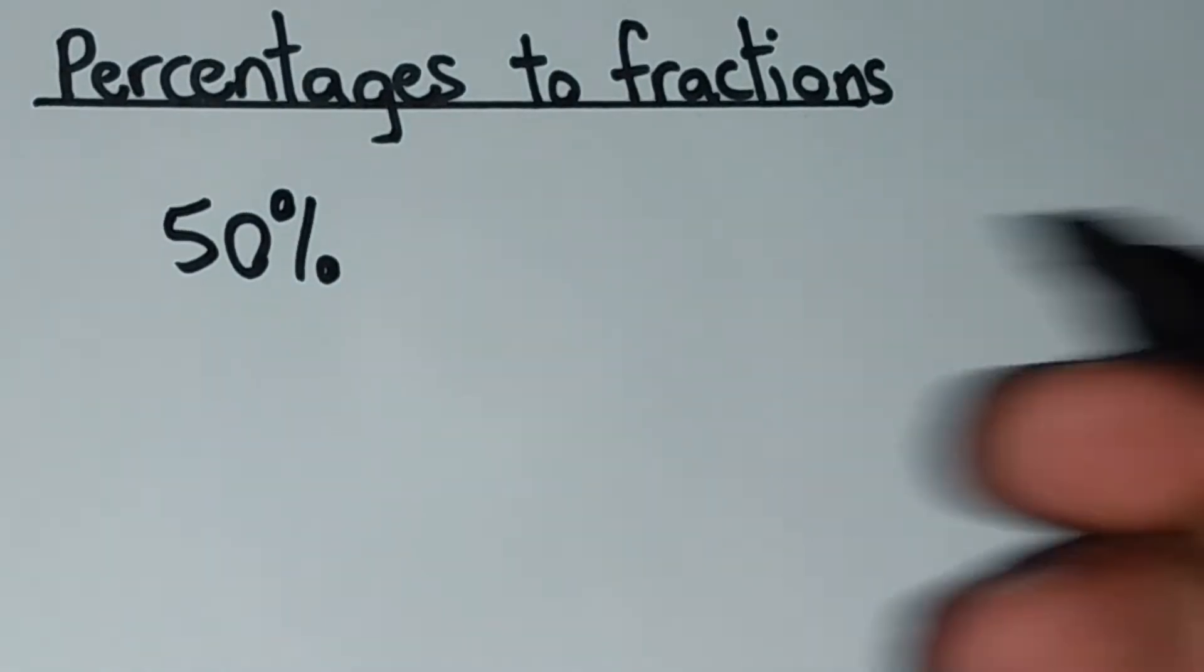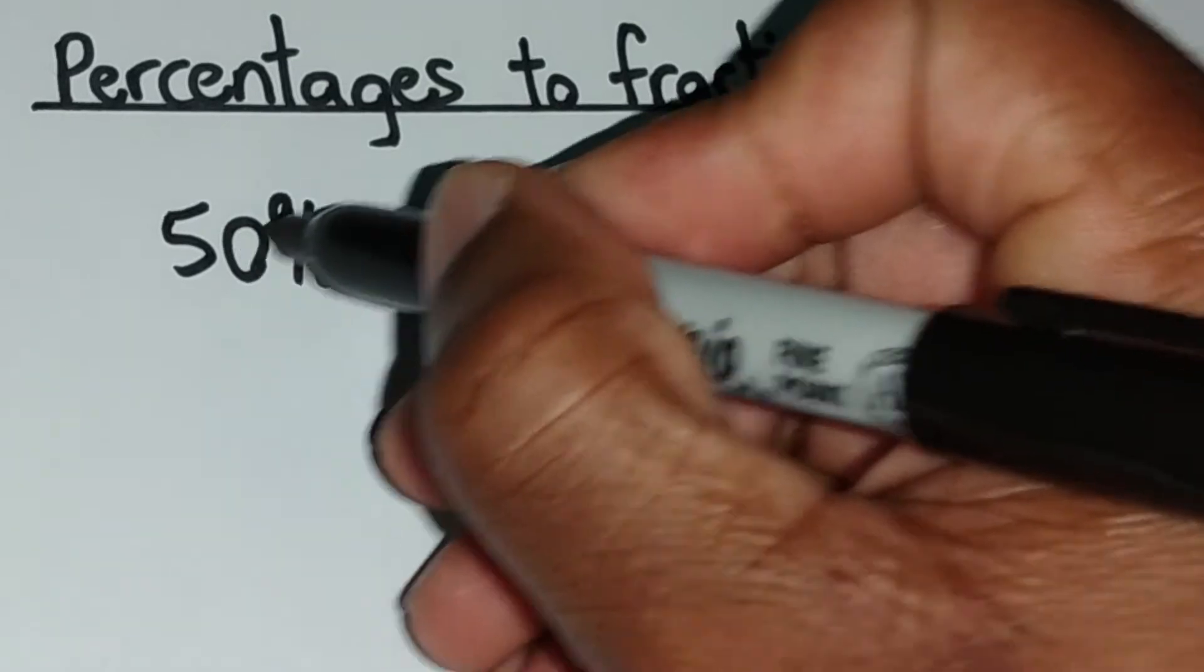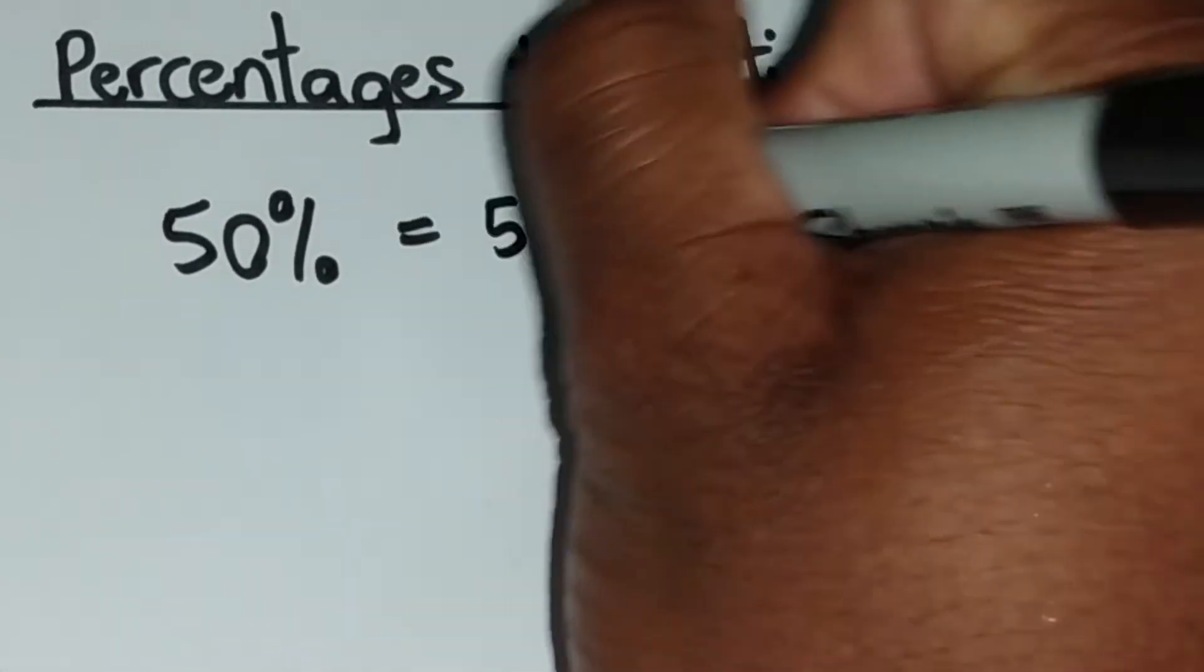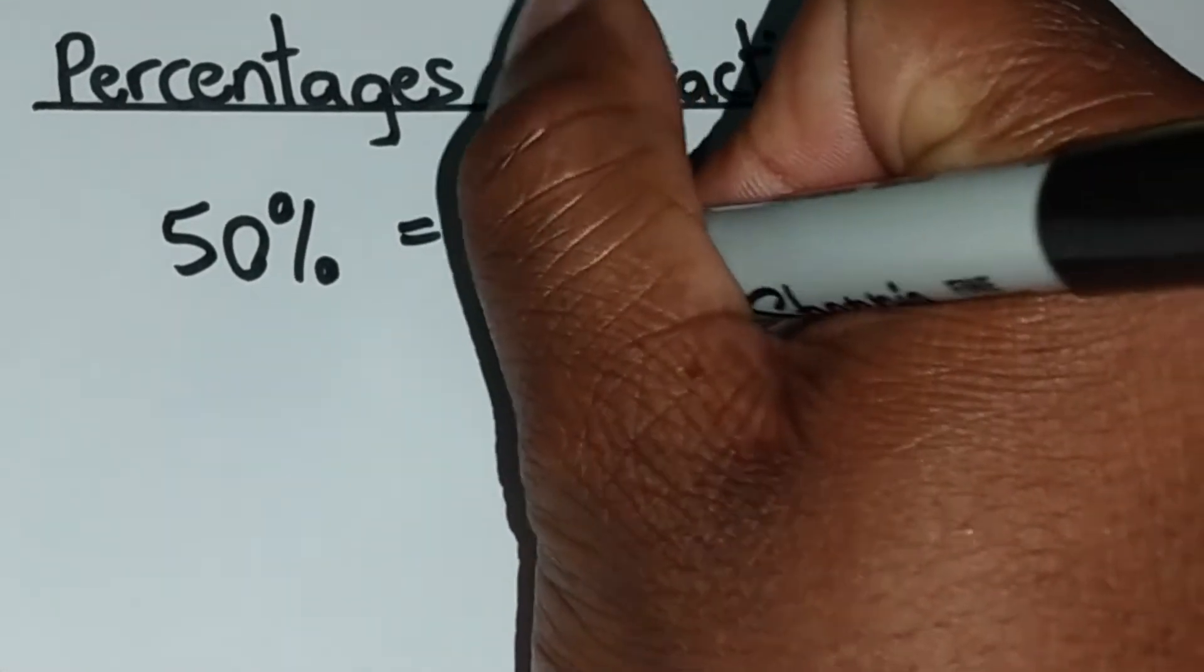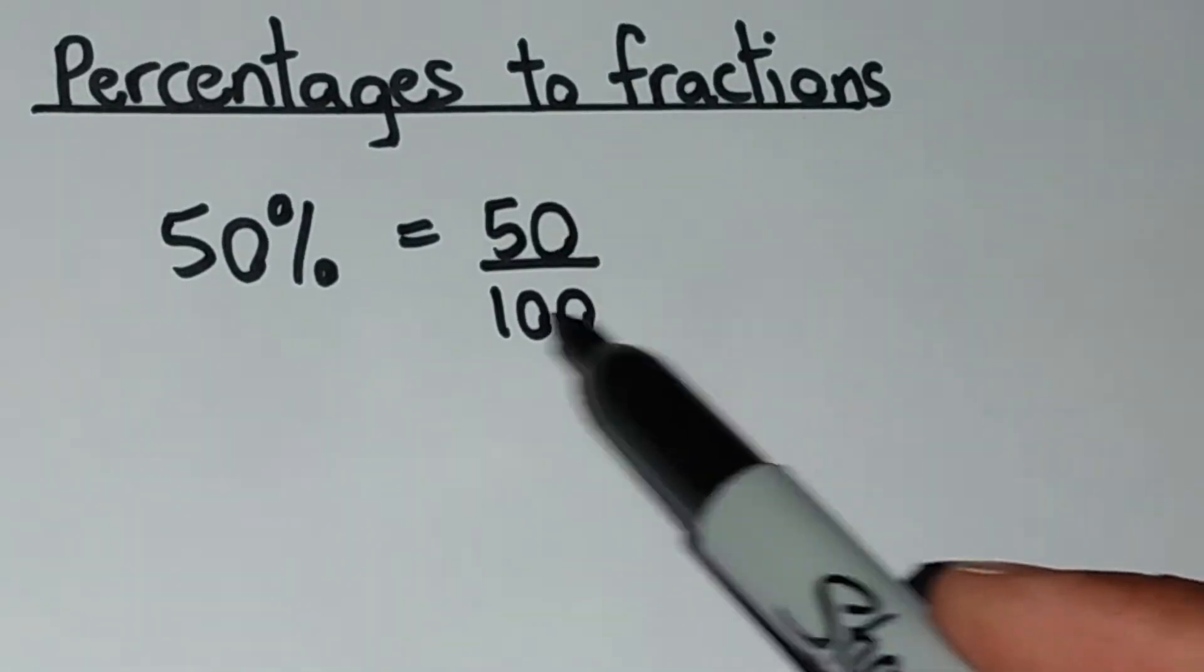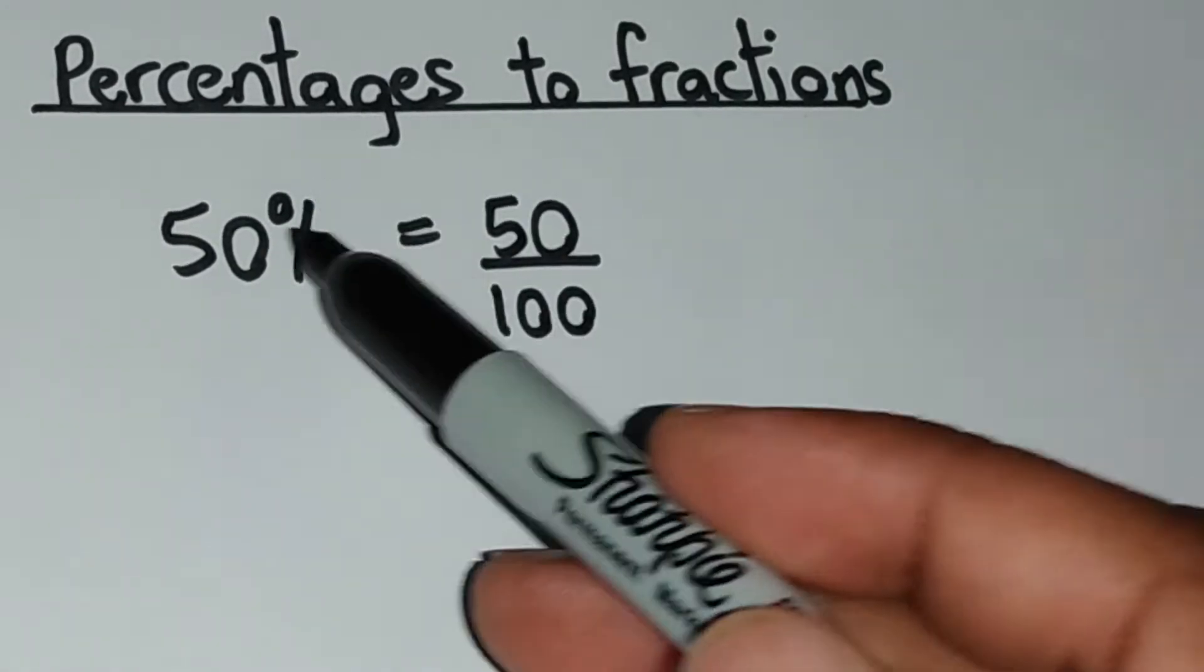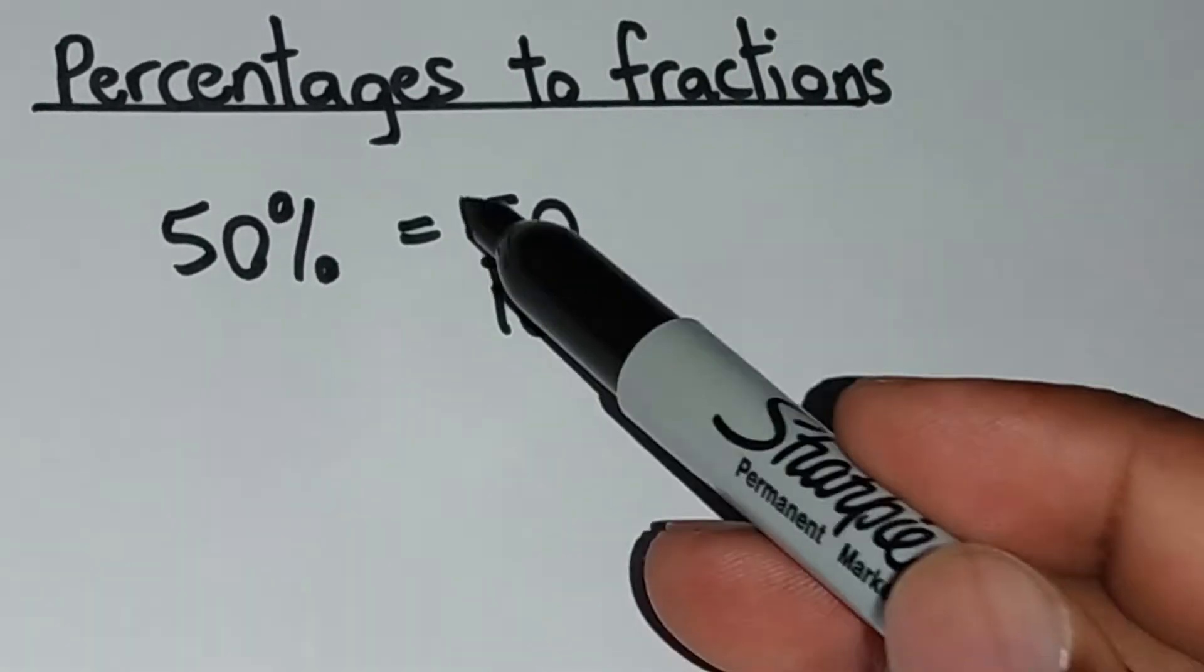Now let's say we had 50%. Now 50% can be written as a fraction by just simply putting this 50 right here over 100. So 50 out of 100 is the same thing as 50%. We're just representing this 50% here as a fraction.